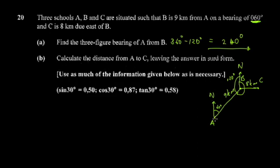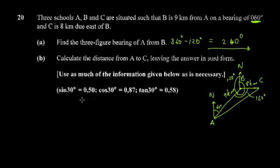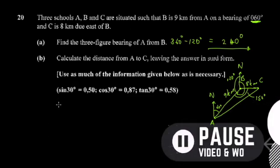You're now asked to calculate the distance from A to C, leaving your answer in surd form. We have two sides — AB and BC — and we need the sandwiched angle ABC. Since the bearing is 240 degrees, the angle ABC is 240 minus 90, which gives 150 degrees.